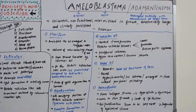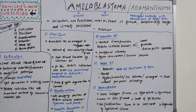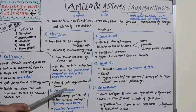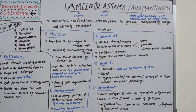Acanthomatous type: the cells occupying the position of the stellate reticulum undergo squamous metaplasia. Acanthomatous relates to cell-to-cell adhesion (as in acantholysis seen in pemphigus). Keratin formation or keratin pearls are seen in this type.